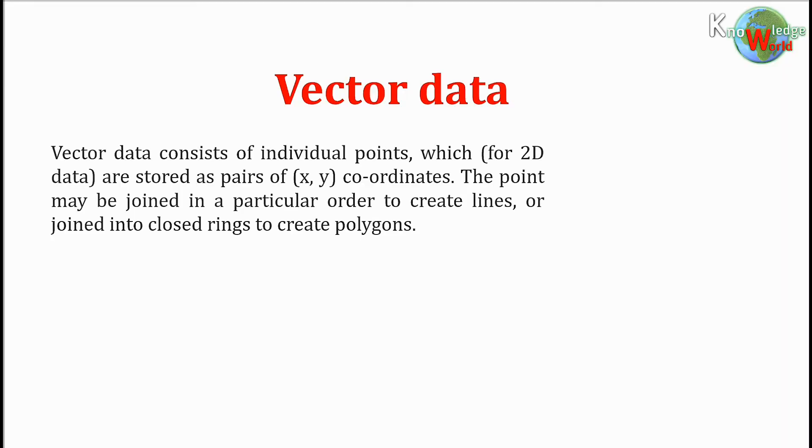Vector data consists of individual points, which for 2D data are stored as pairs of X and Y coordinates. The point may be joined in a particular order to create lines, or joined into closed rings to create polygons.